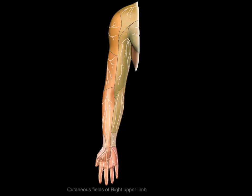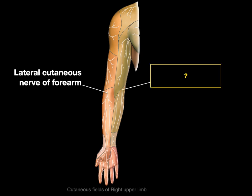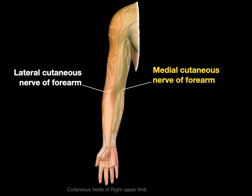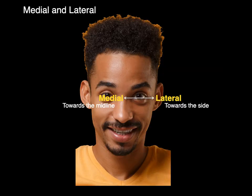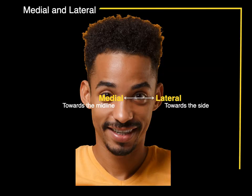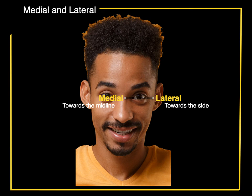And here we have one more. They call this one the lateral cutaneous nerve of the forearm. What do they call this one? It is the medial cutaneous nerve of the forearm, because it is on the medial surface of the forearm providing cutaneous sensation. And that, my friends, are the terms medial and lateral in a nutshell.